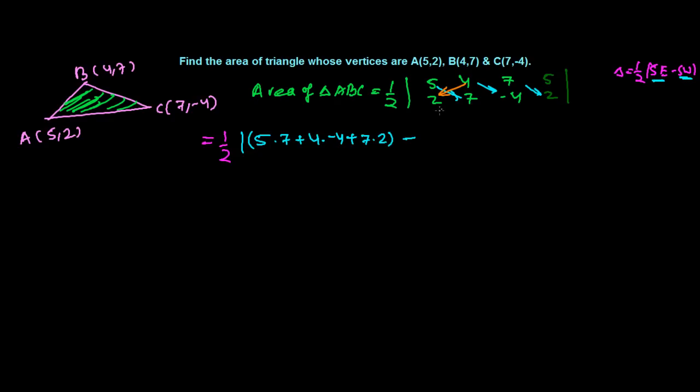Now we have finished with the southeast, now let's deal with southwest. In southwest, first one is 4 times 2, and then second one is 7 times 7, and the third one is 5 times minus 4.